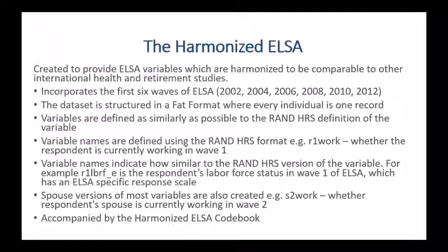Variables are defined as similarly as possible to the RAND HRS definition. The RAND HRS is a harmonized, cleaned version of the Health and Retirement Survey conducted in the United States by the University of Michigan. Roughly 90% of research done using the HRS involves this RAND HRS data. One hallmark is that variable names use a simple naming convention — for example, R1WORK means whether the respondent is currently working in wave 1, which is the 2002 baseline wave of ELSA. Variable names also indicate how similar the variable is to the RAND HRS version.